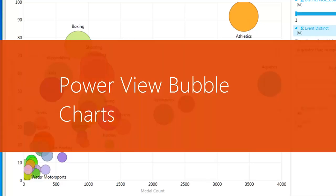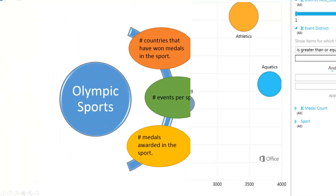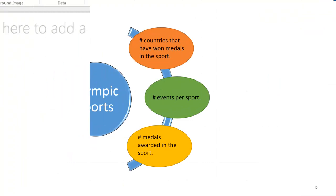Scatter and bubble charts are a great way to display a lot of related data in one chart. For this video, I'll use a bubble chart to look at Olympic sports and see three things at once: the number of countries that have won medals in that sport, the number of events that make up that sport, and the number of medals that have been awarded for that sport.